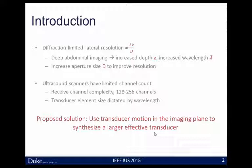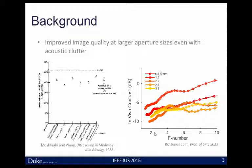Our proposed solution is to use transducer motion within the imaging plane with a conventional transducer to simply synthesize a larger effective array. In doing that, we gain the same image quality as we would have with a physically larger transducer. The literature leads us to believe we would expect increased image quality as we move to larger aperture sizes, even in the presence of acoustic clutter like we might see in the abdomen. On the left we see improved resolution looking at ex vivo liver samples as we go to a large 5-centimeter piston. On the right is some of our work showing improvements in image contrast as we increase the aperture size, looking at in vivo liver vasculature. Both of these suggest we should continue to move towards larger array sizes.